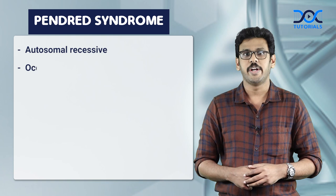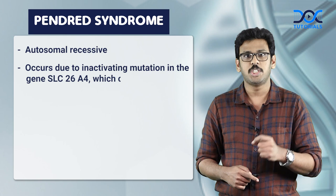Hi everyone. Let's discuss a super learning bite in endocrinology on Pendred syndrome. Pendred syndrome is an autosomal recessive condition due to an inactivating mutation in the gene SLC26A4, which codes for a transporter called Pendrin.